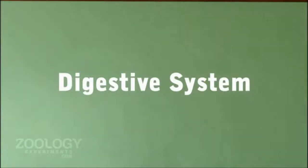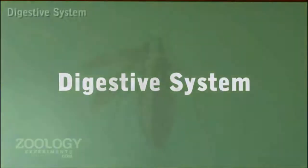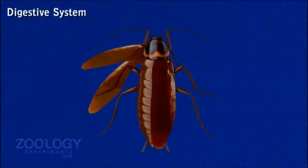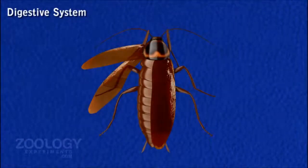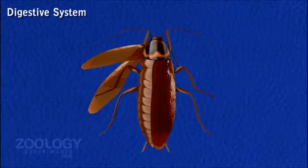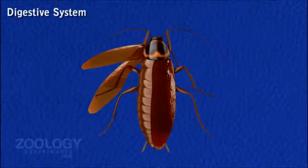Digestive System. This is the most prominent organ system in the body. It includes the mouth part, a long alimentary canal and a pair of salivary glands.